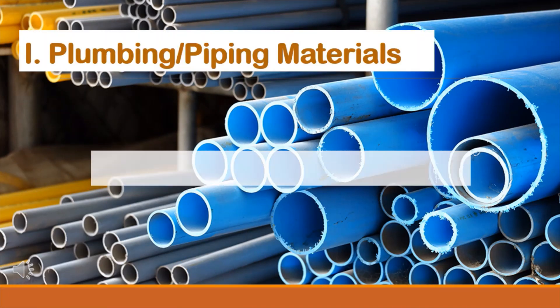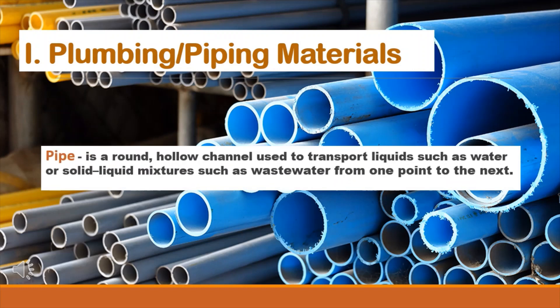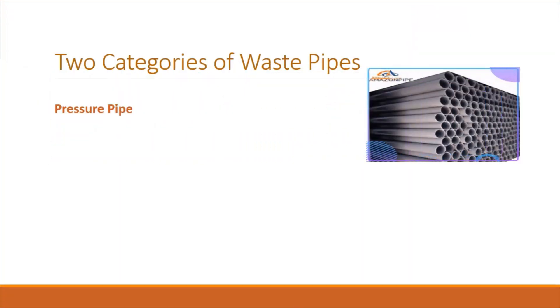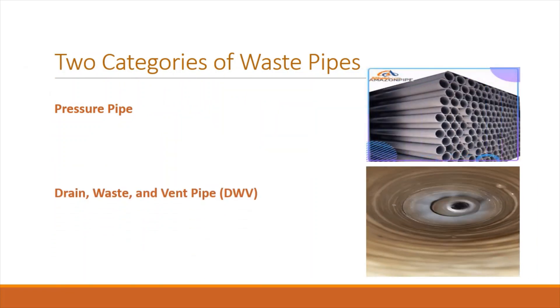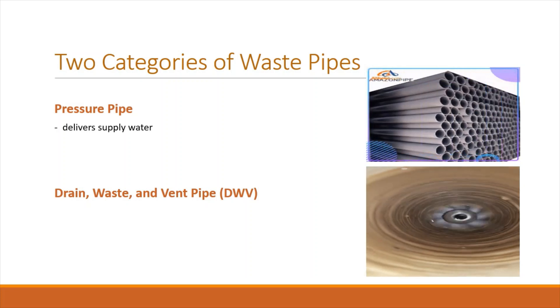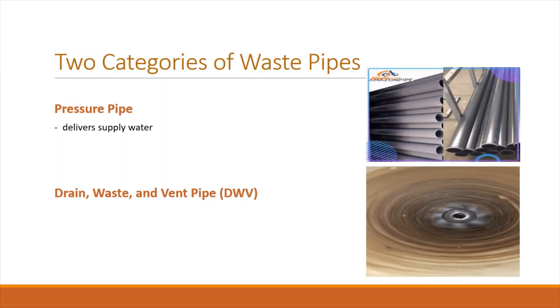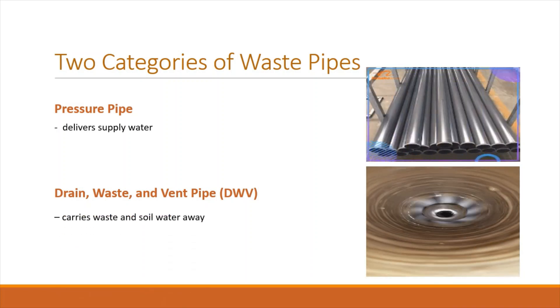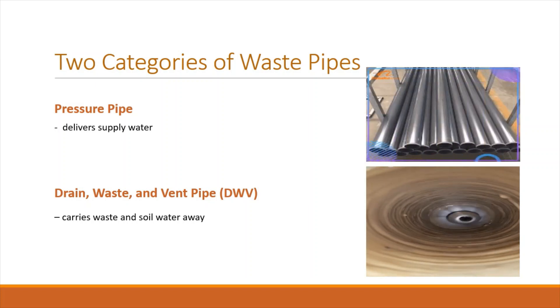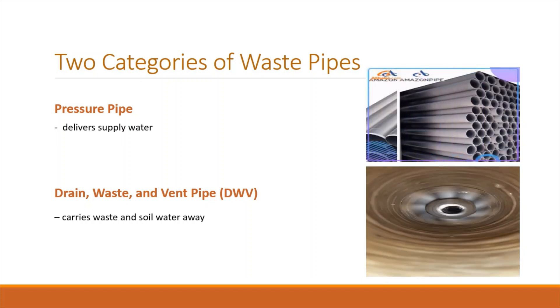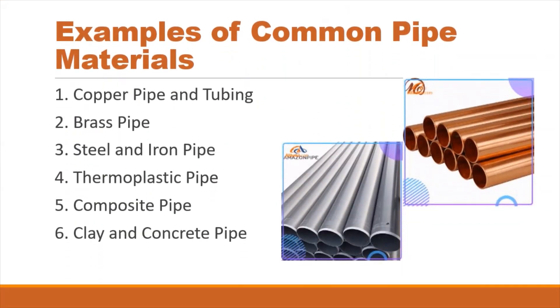A pipe is a round hollow channel used to transport liquids such as water, or solid-liquid mixtures such as wastewater, from one point to the next. There are two categories of pipes: pressure pipe and drain, waste, and vent pipe, or DWV. Pressure pipe delivers supply water — it must be heavy enough to hold continuous pressure without rupture, and all connections must be leak-proof. DWV carries waste and soil water away, providing a channel for waste materials to flow freely by the force of gravity.